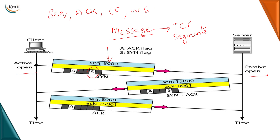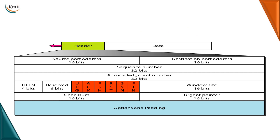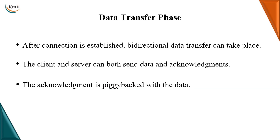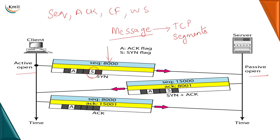Just to remind you about the structure of the TCP segment — this is the structure where we have a set of control flags: urgent flag, acknowledgement, push, reset, synchronize, and finish. We are going to make use of the acknowledge and synchronize flags for establishing the connection. We have a segment with sequence number 8000 and the client would like to establish a connection, so it is trying to synchronize with the server and will set the synchronize flag to 1.